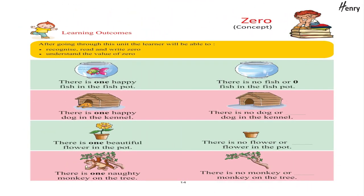Zero concept. Learning outcomes: after going through this unit, the learner will be able to recognize, read, and write the concept of zero. There is one happy fish in the fish pot. There is no fish — zero fish — in the fish pot.